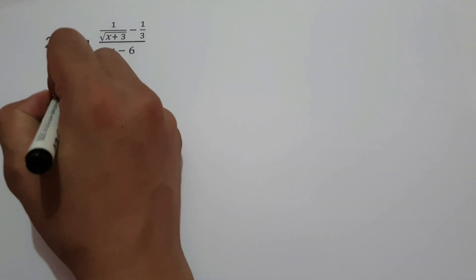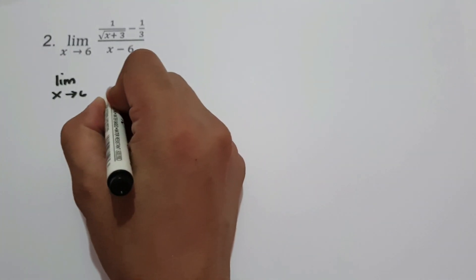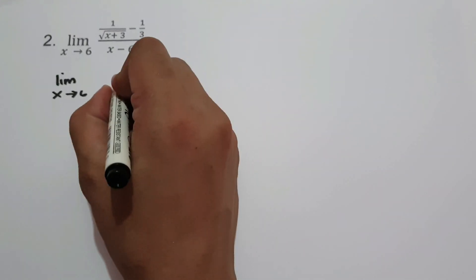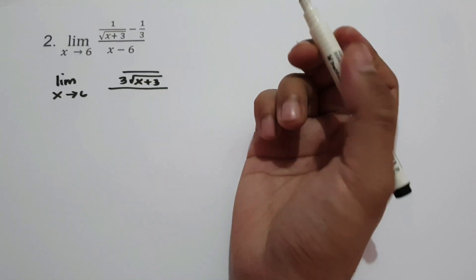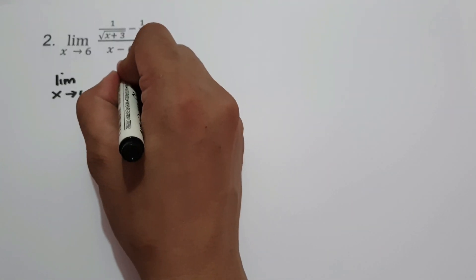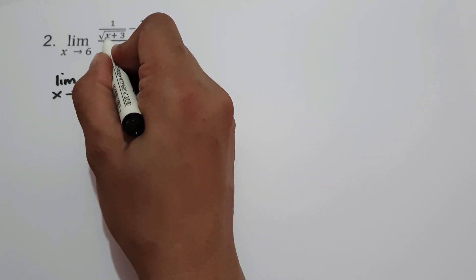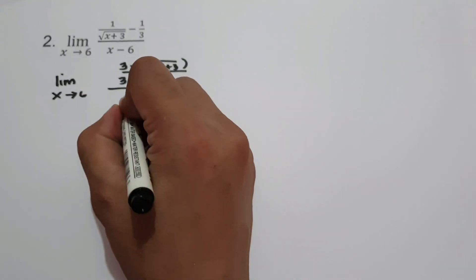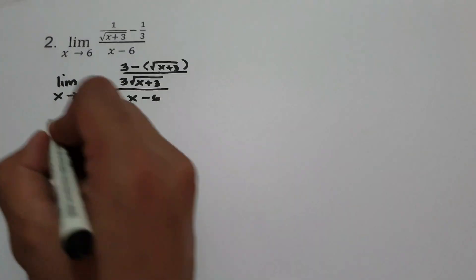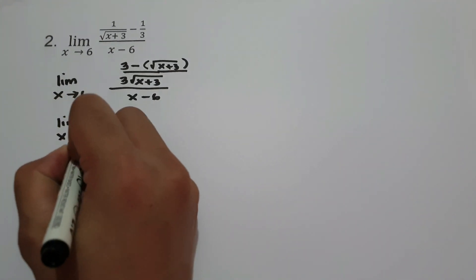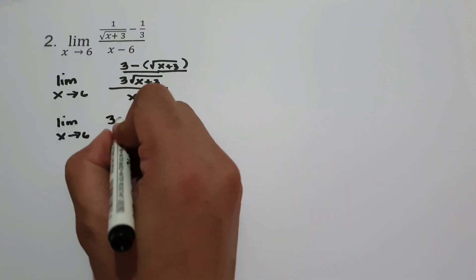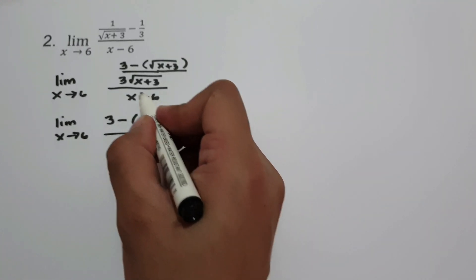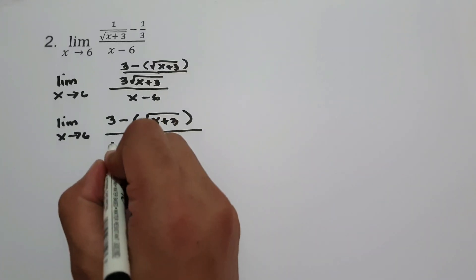Let's have limit as x approaches 6. Let us find the LCM of 3 and square root of x plus 3, and that is 3 times square root of x plus 3. Let's multiply 3 times 1, that is 3, and then negative 1 multiplied by square root of x plus 3, giving negative square root of x plus 3. Let us rewrite x minus 6. We have limit as x approaches 6, rewriting 3 minus the quantity of square root of x plus 3, all over x minus 6 times 3 square root of x plus 3.